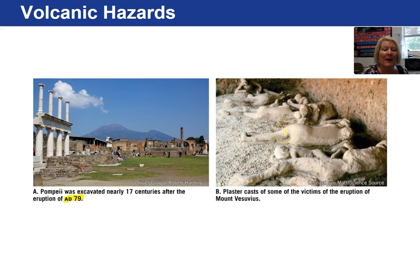Another example of a pyroclastic hazard was Pompeii, which erupted all the way back in 79 AD. Here they have made plaster casts of some of the victims as a result of the eruption of Mount Vesuvius.